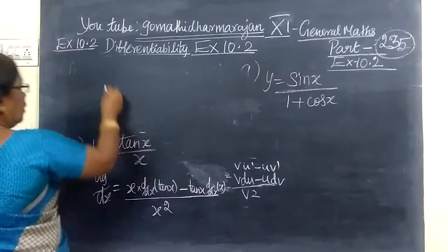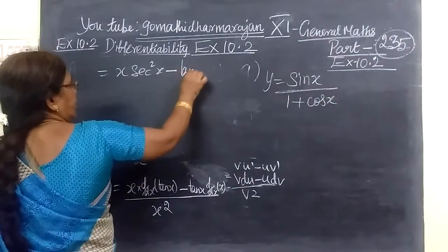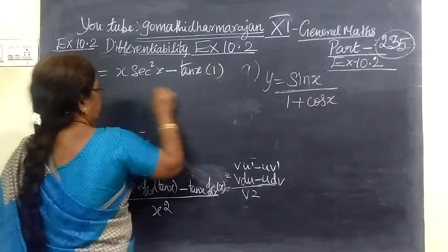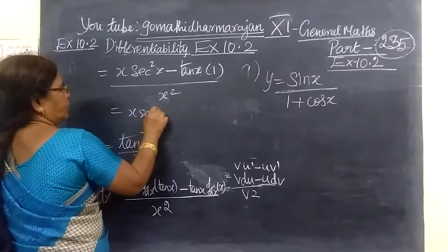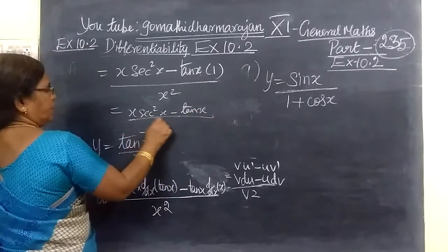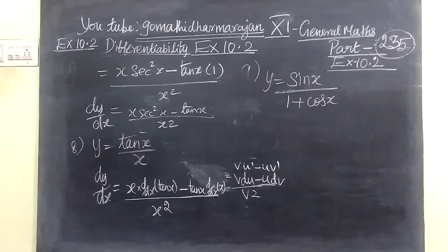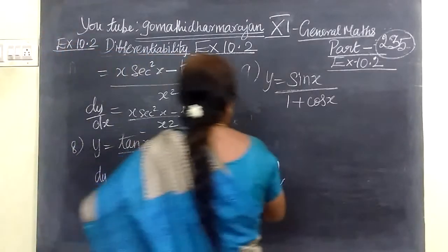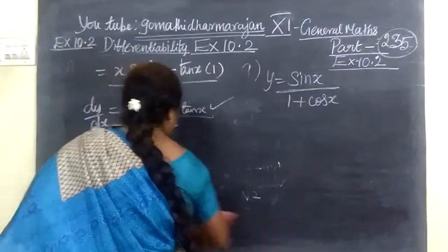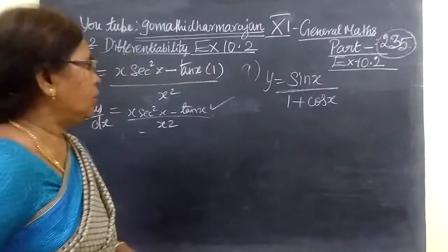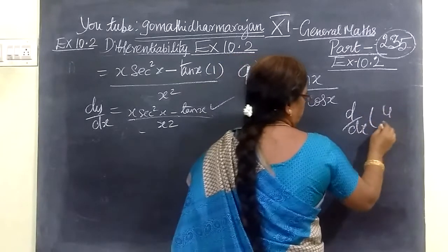So this is equal to x and then the expression equals x minus tan x. And then you can write x by x. So this is the answer. Your expression is cos x minus tan x divided by x. So the answer for this is cos x minus tan x by x. Now coming to the next part.